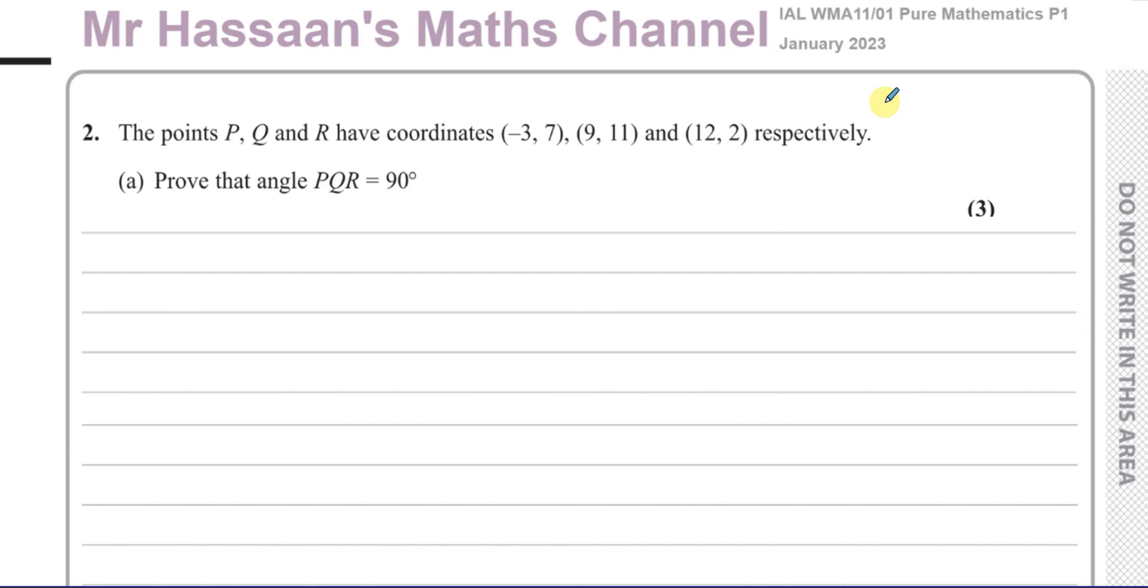This question is about these coordinates that were given of three points P, Q and R. We've got to prove that angle PQR is 90 degrees.